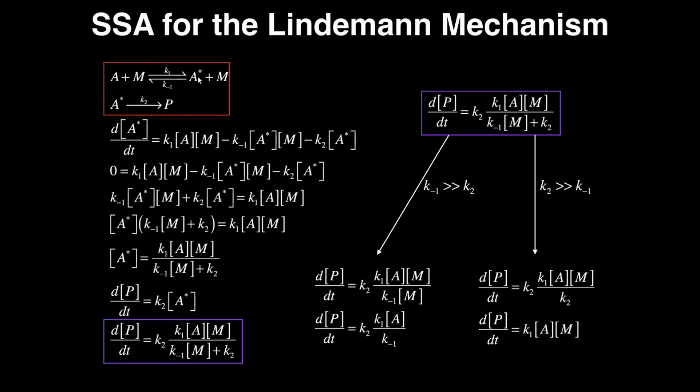So my first step in steady state approximation is make an expression for the rate of change of that activated A with respect to time. So d[A*]/dt. Well, it's formed by K1, so positive K1[A][M] because those are the reactants of that reaction. Now we have two reactants that are consuming A star, K2 and K-1. So minus K-1, this is going to be negative because it's consuming A star. And the reactants with respect to that reaction are A star and M. So times [A*][M].